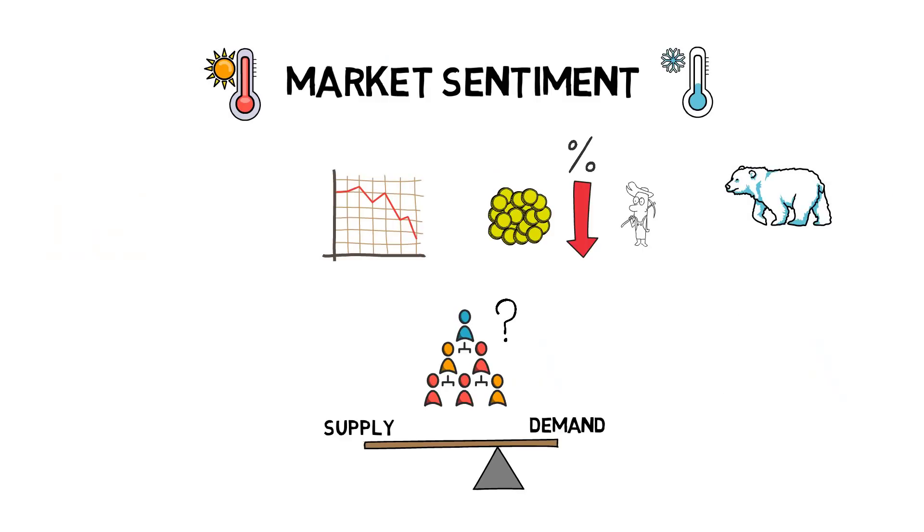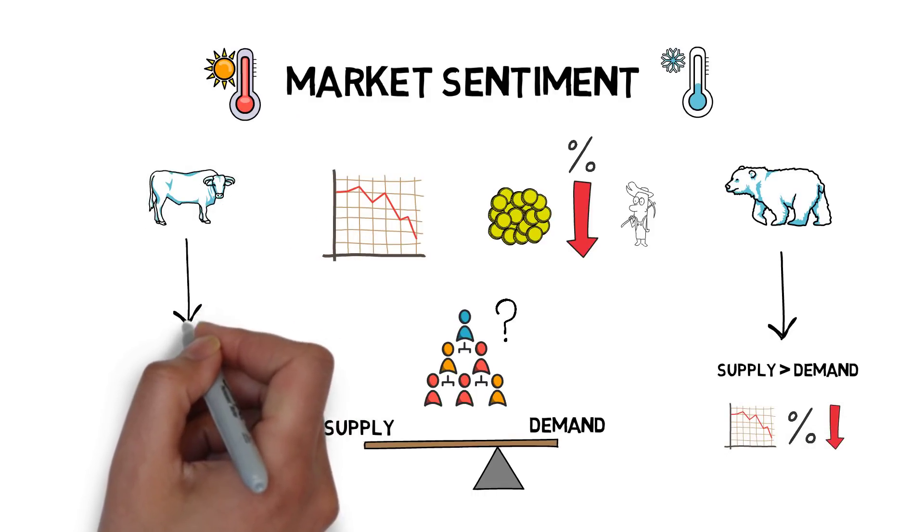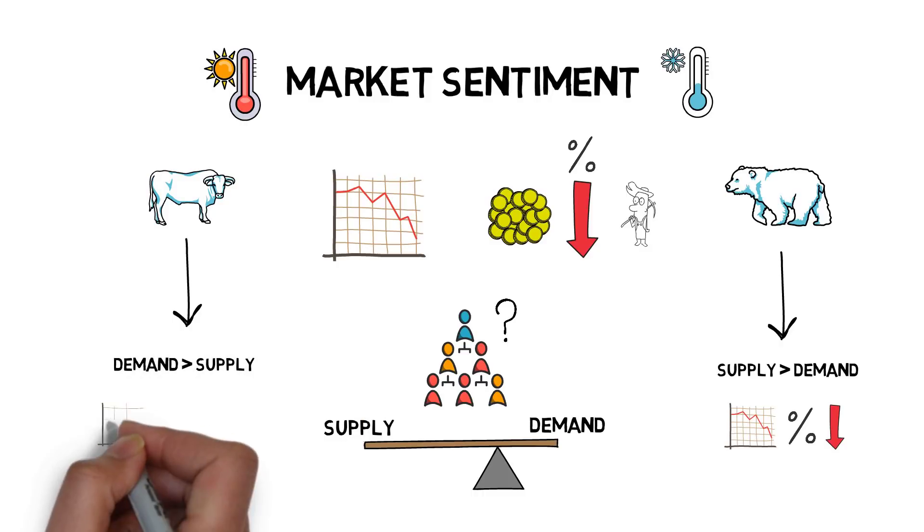Bear market: higher supply than demand, lower prices, lower yields. Bull market: higher demand than supply, higher prices, higher yields.